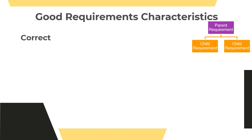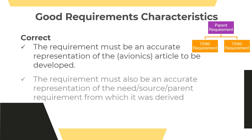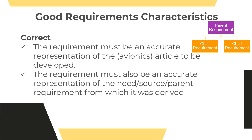Further, is the requirement correct? A good requirement needs to be correct. Looking from the parent requirement down to the component requirements — what is captured at the component level should be an accurate depiction of the intent of the parent requirement. The requirement must be an accurate representation of the avionics article to be developed, as well as an accurate representation of the source or parent requirement from which it was decomposed.